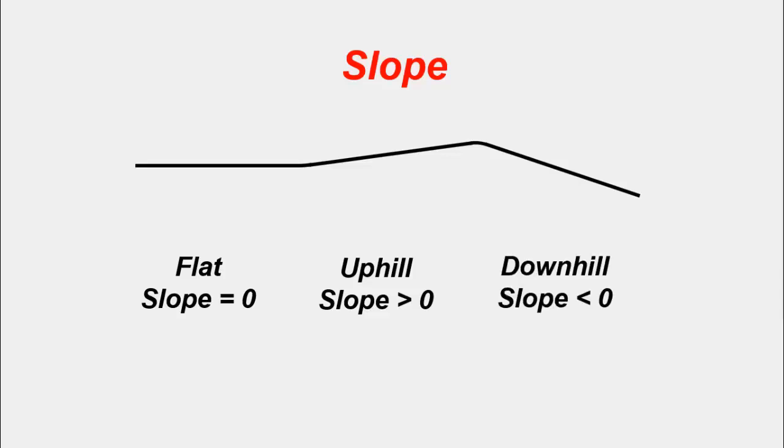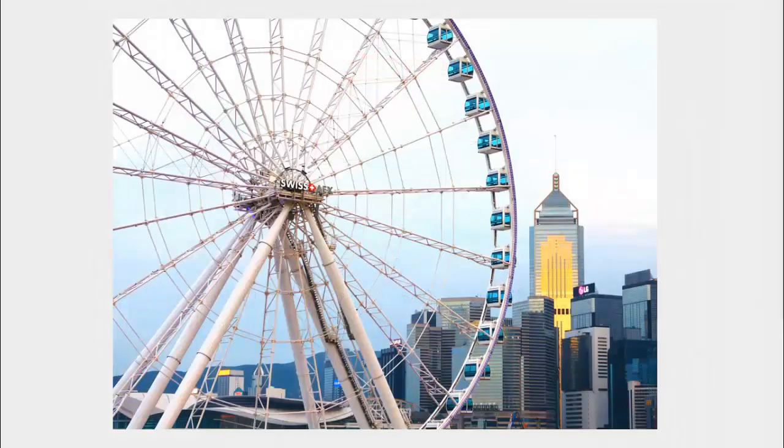To summarize, a flat or horizontal line slope is always 0. An uphill slope is always positive, greater than 0. And finally, a downhill slope is always negative, or less than 0.